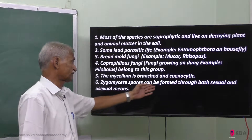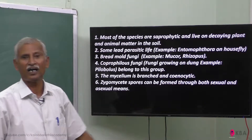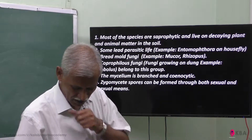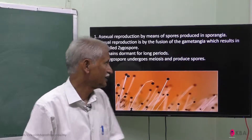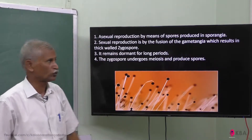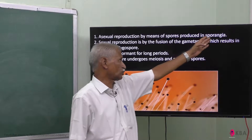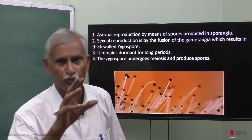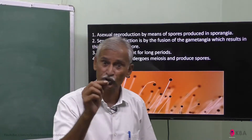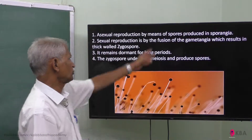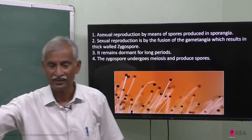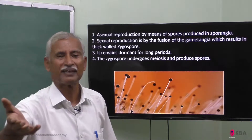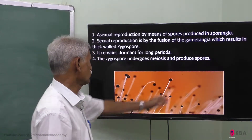Zygomycetes spores can be formed sexually or asexually. For asexual reproduction, spores are produced inside a sporangium — spore-forming cells — and then the spores are dispersed through the air and spread to somewhere else.